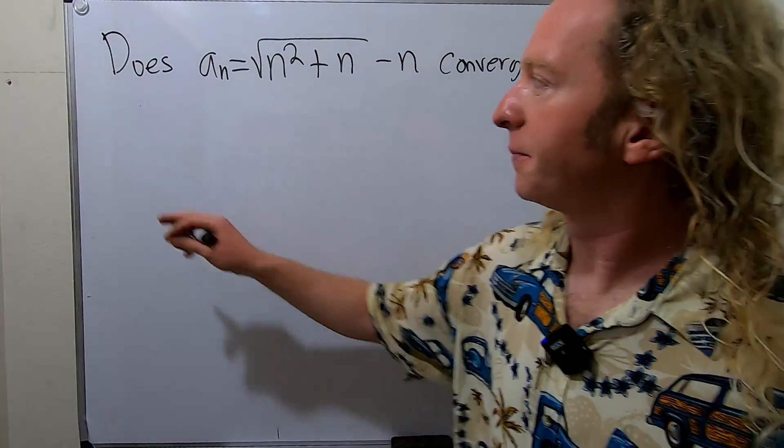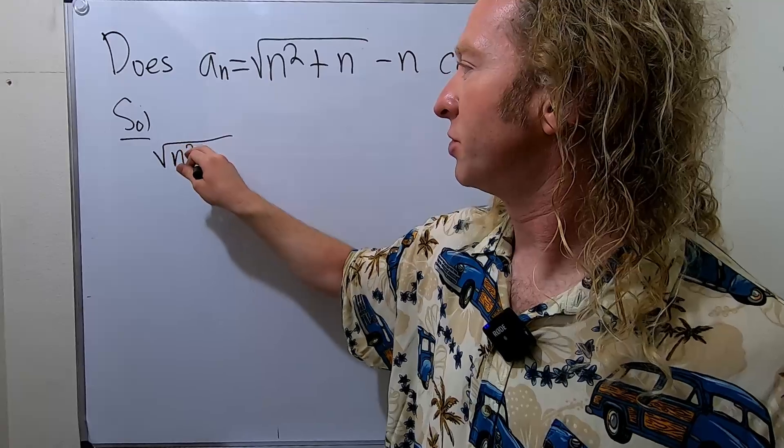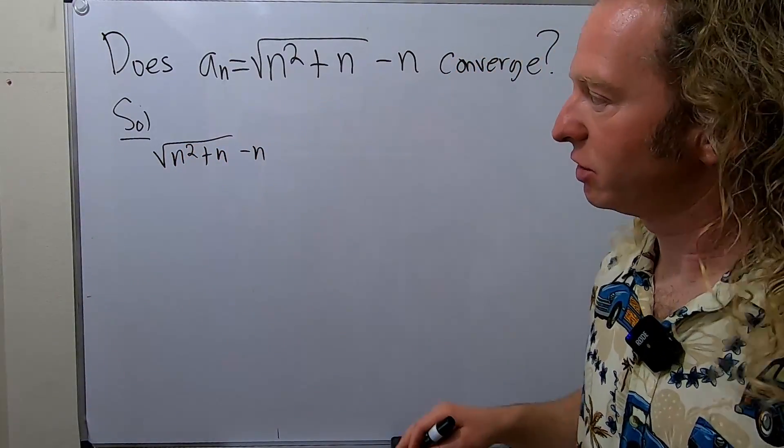Here's the trick. The idea with something like this is to rewrite it. We have n squared plus n minus n, and the idea is to rationalize the numerator.